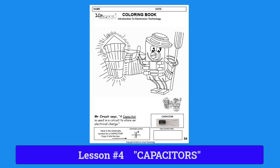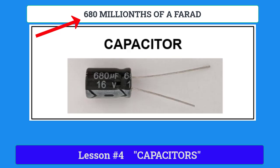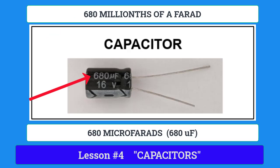A picture of a capacitor is shown at the bottom right-hand side of the page. This is a fixed electrolytic capacitor. By the word fixed, we mean that the capacitor has only one value of capacitance — it is not variable. The one shown on the page has a value of 680 millionths of a farad, sometimes called 680 microfarads, and can handle up to 16 volts.